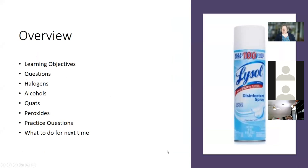Here's what we're going to cover today. We're going to go over the learning objectives, then open it up to questions. Then we'll talk about halogens, alcohols, quats, peroxides. I'll have practice questions scattered throughout, and then we'll talk about what to do for next time.